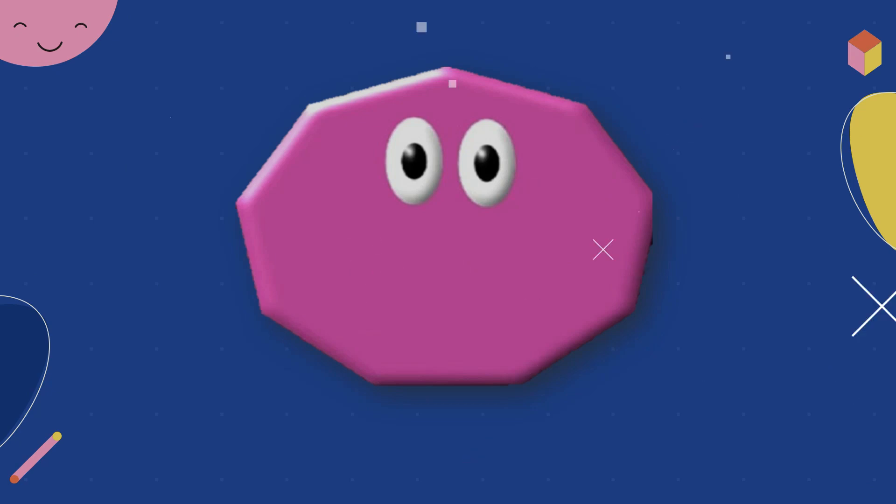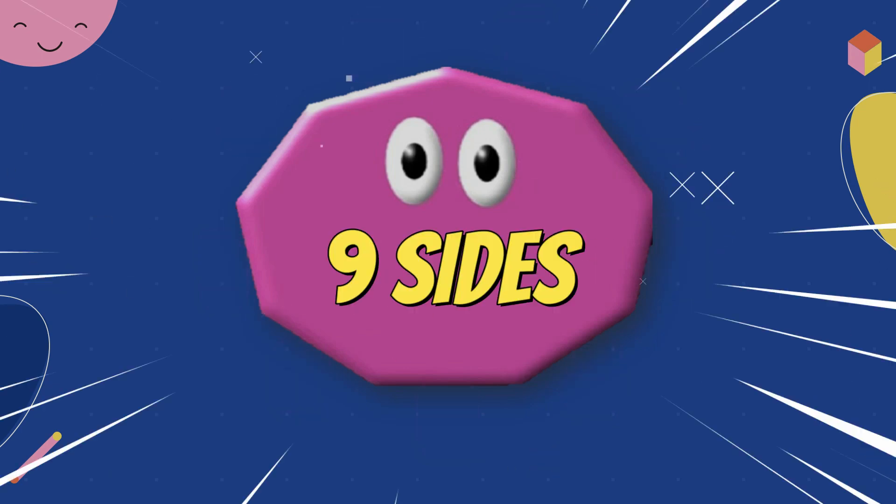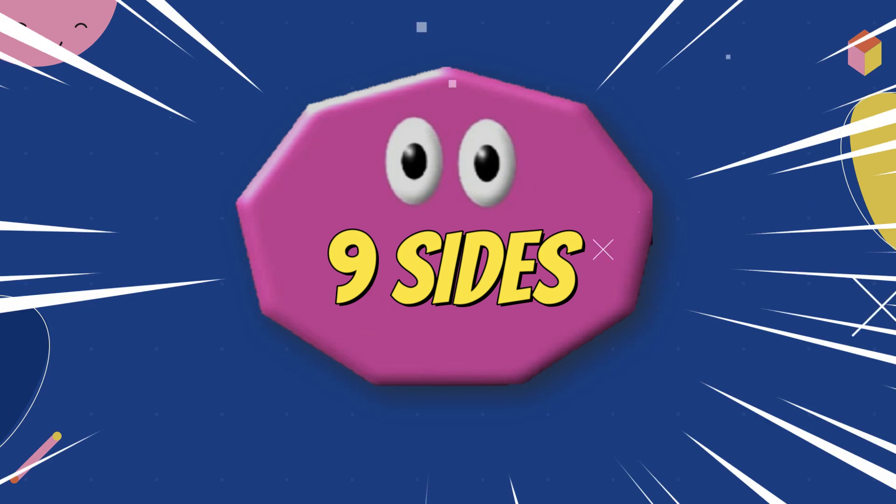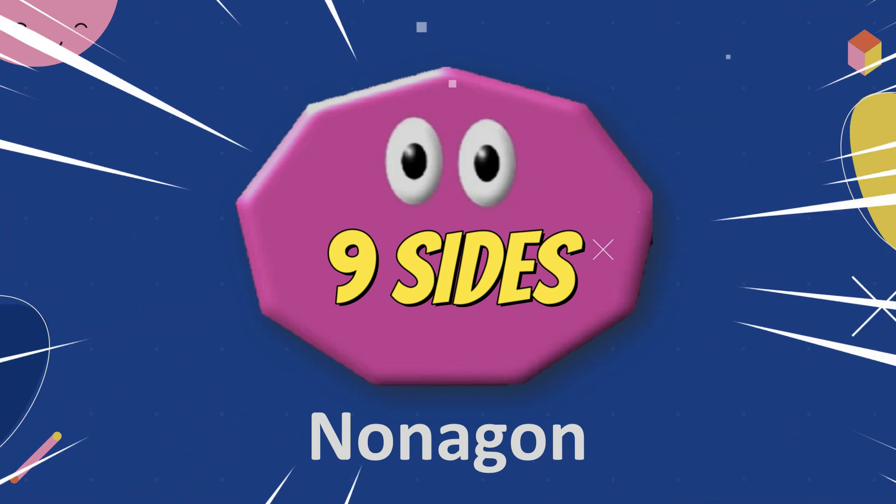Let's count the number of sides. One, two, three, four, five, six, seven, eight, nine. Nine sides is nonagon. Nona means nine. Nonagon.